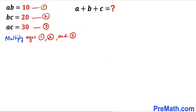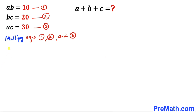Our next step is to multiply all three equations together — multiplying the left hand sides and at the same time the right hand sides. So we write a times b, times b times c, times a times c, equal to 10 times 20 times 30.